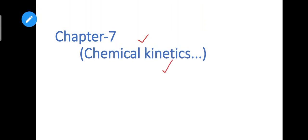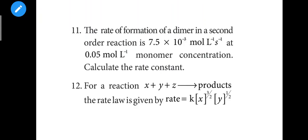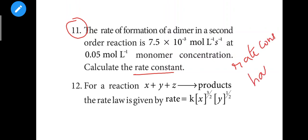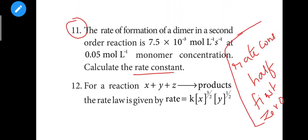Next chapter is Chemical Kinetics — these are important problems. Question 11: the rate of formation of a dimer. The rate constant for a first order reaction is 1.54 — a very important question involving half-life. Also includes a zero order problem. Give importance to this chemical kinetics chapter.